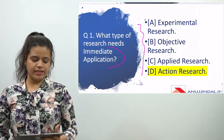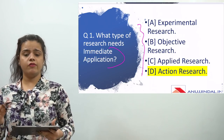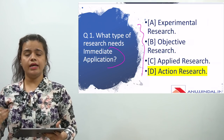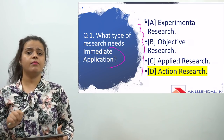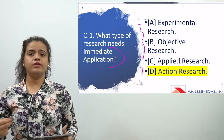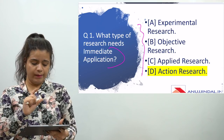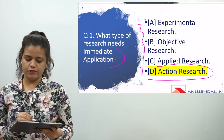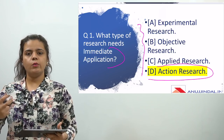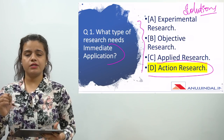Let's start. The first question is: what type of research needs immediate application? If you have studied types of research, which are very important for UGC NET exam — every year there are two questions from types of research. They basically ask from definitions. The question mentions 'immediate application,' which is a clear-cut definition of action research. Action research is always used for immediate application and immediate solutions.